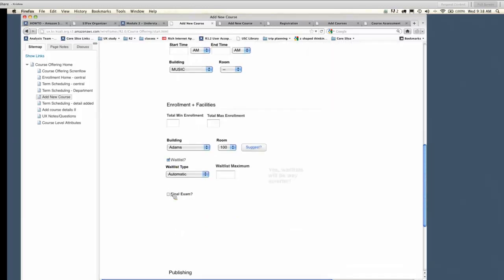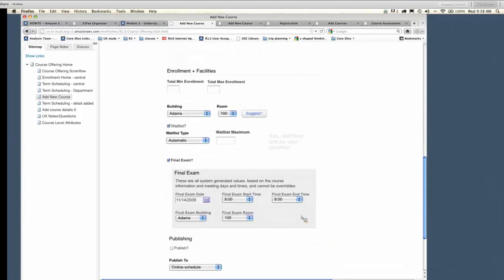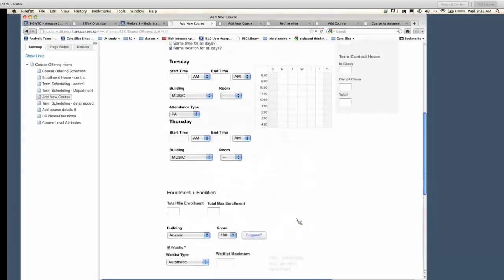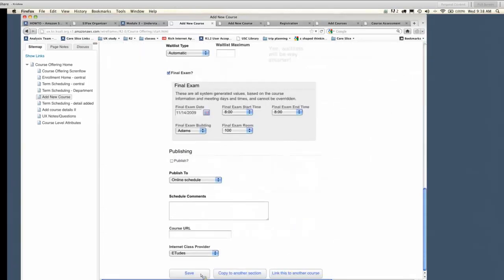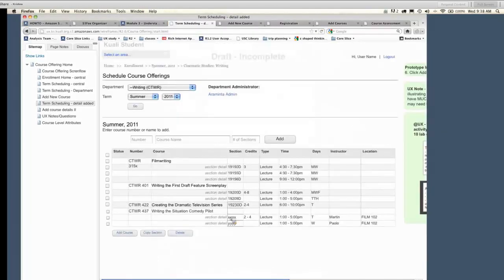Whether it would be the same for all days or different for different days. So if you needed to do some kind of structured thing that had a different start time on Tuesday than Thursday, you could detail that information. Then go into information about the enrollment and whether or not there would be a wait list or a final exam, and whether the information would be published. All of this information is stuff that they would have to add into whatever course offering shell existed on the last page. Once all that information was put in, they'd come back to that screen and see that we've added this is Tuesday and Wednesday, we've got instructors, location, and a time.